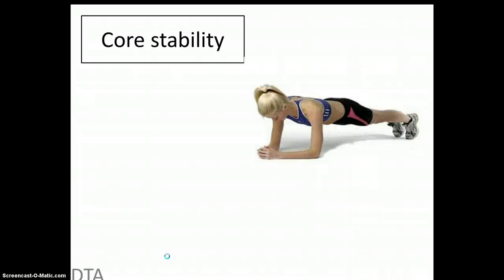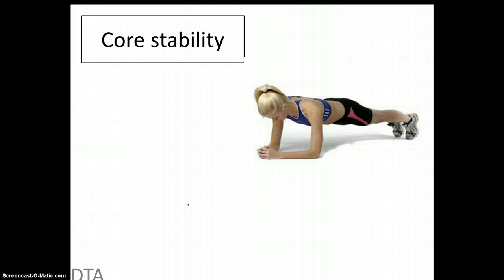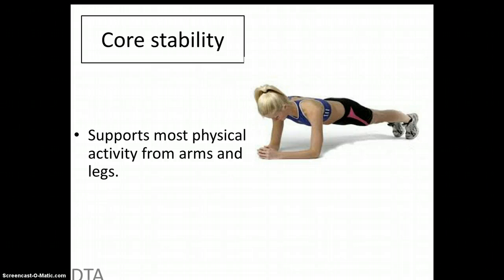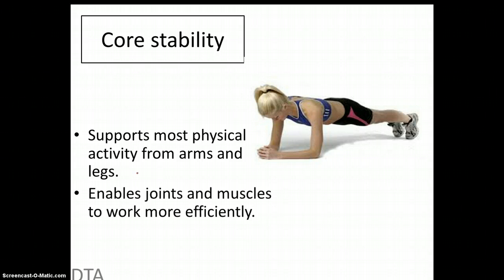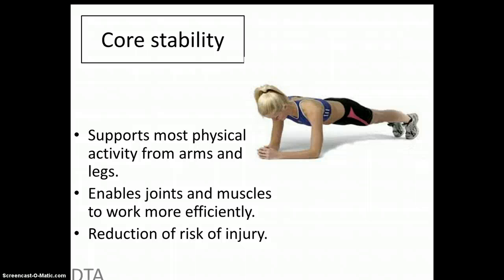The next section we need to look at, and again this is a very important part for A-level, is core stability. One way to improve it is by doing exercises like the plank or sit-ups. For A-level we need to know the purpose: core stability supports most of our physical movement from our arms and legs, it enables joints and muscles to work more efficiently, and as a knock-on effect it provides a reduction in the risk of injury.